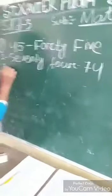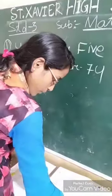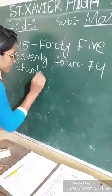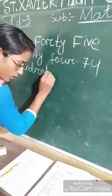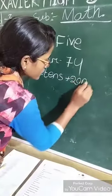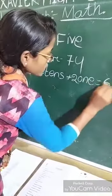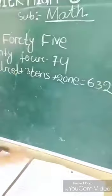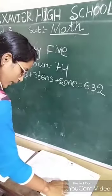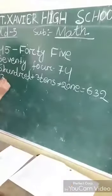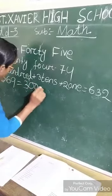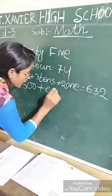Number 3: Write the following in short form. That means 600 plus 30 plus 2 equals 632. Number 4: Write each of the following in the expanded form. 369 equals 300 plus 60 plus 9.